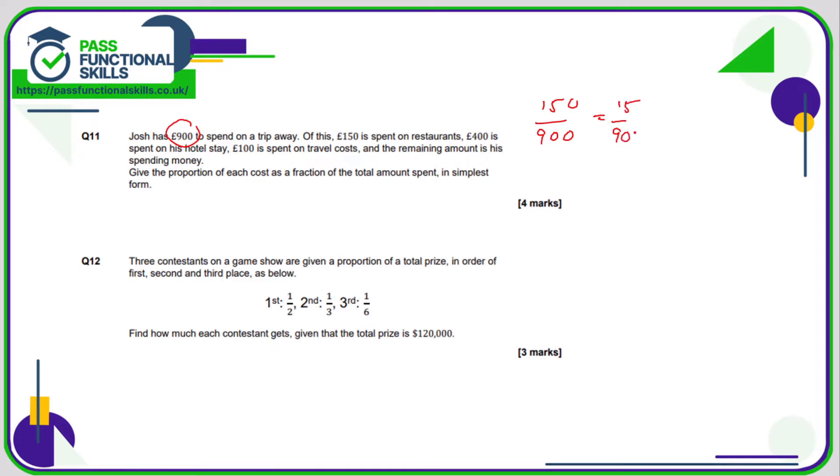So we just need to simplify it. 150 out of 900: let's divide by 10, that's the same as 15 out of 90. We've now got two numbers which are divisible by five. 15 divided by five is 3, 90 divided by 5 is 18.